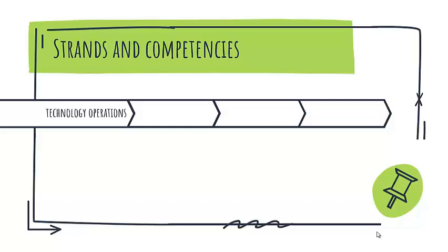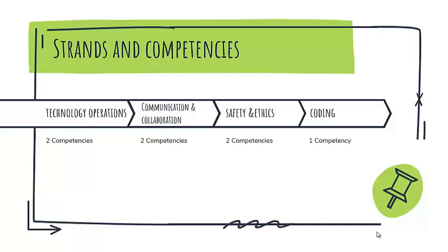There are four strands in ICT curriculum and in each strand there are certain number of competencies. For class 7 curriculum, in technology operation there are two competencies, in communication and collaboration there are two competencies, in safety and ethics there are two competencies, and in coding there is only one competency.